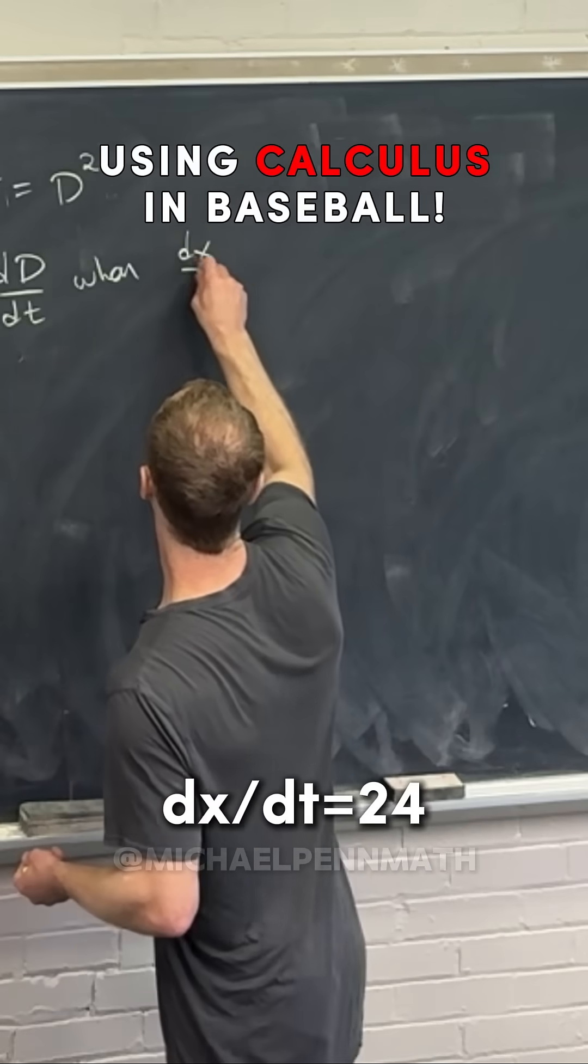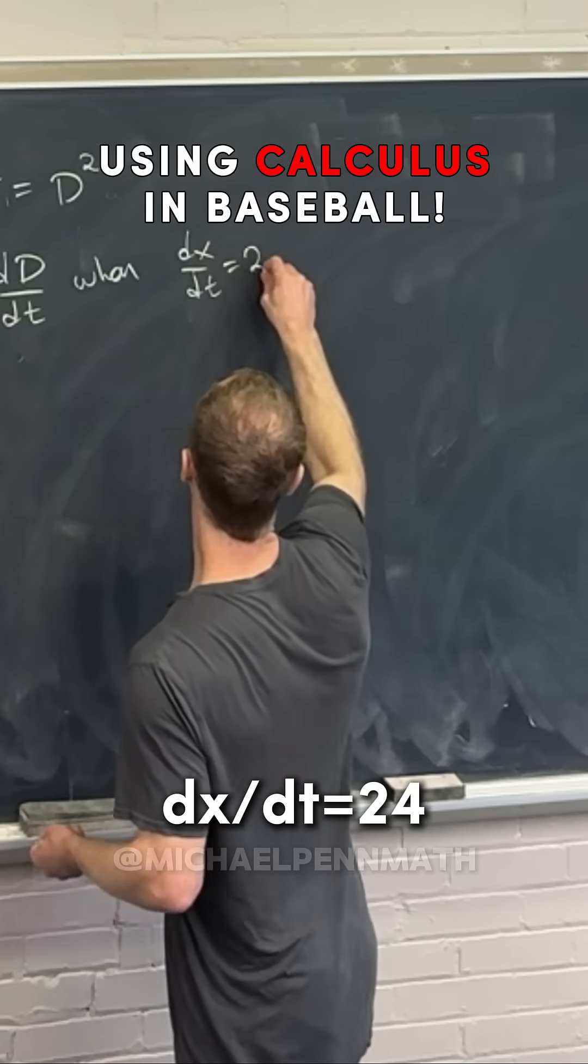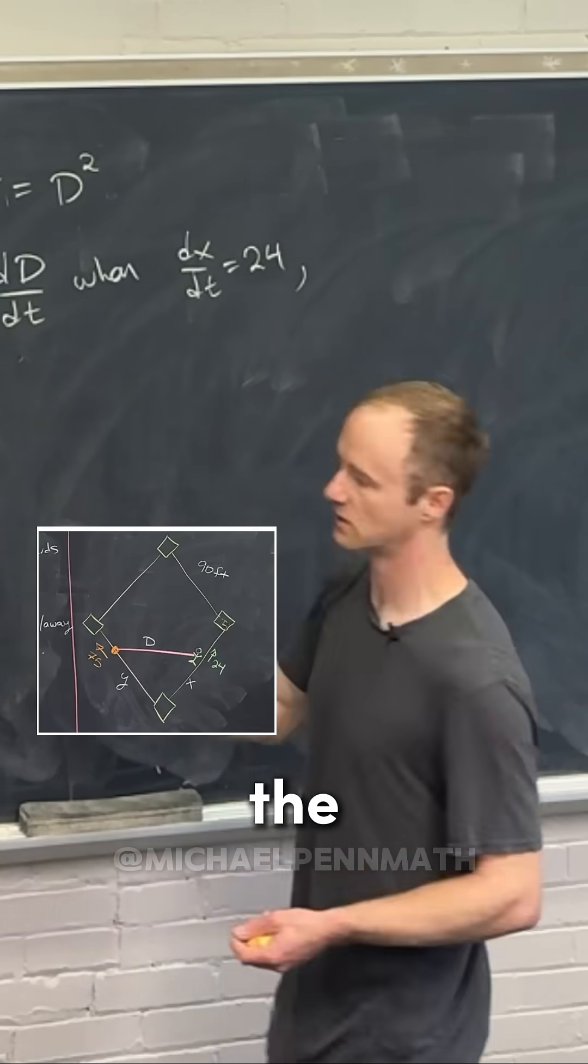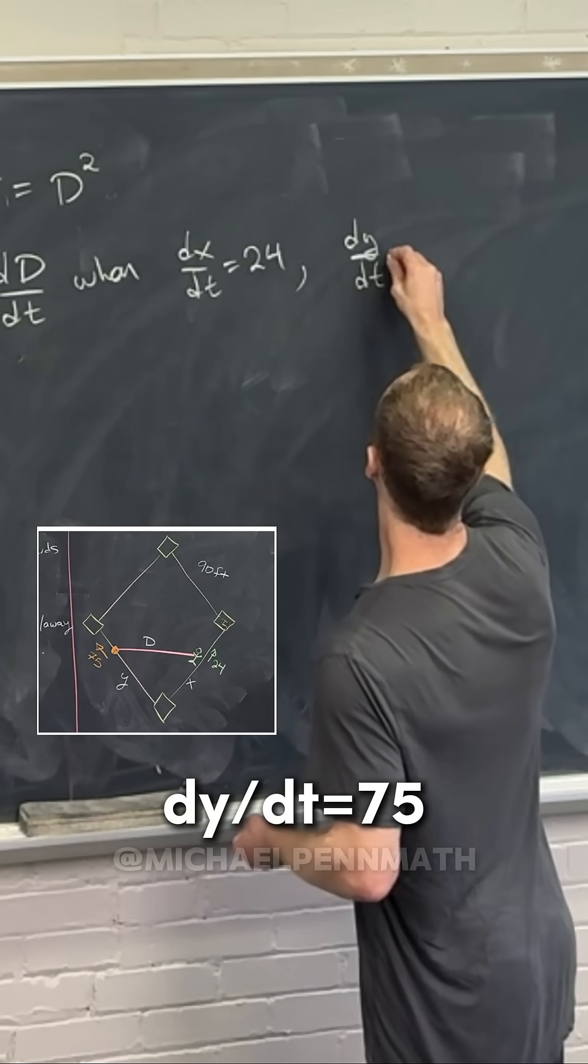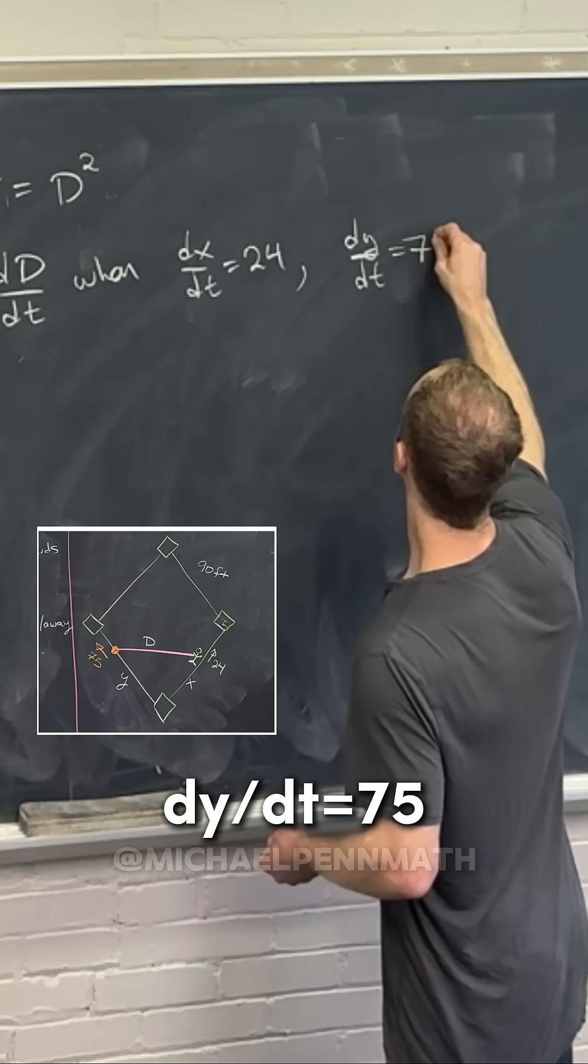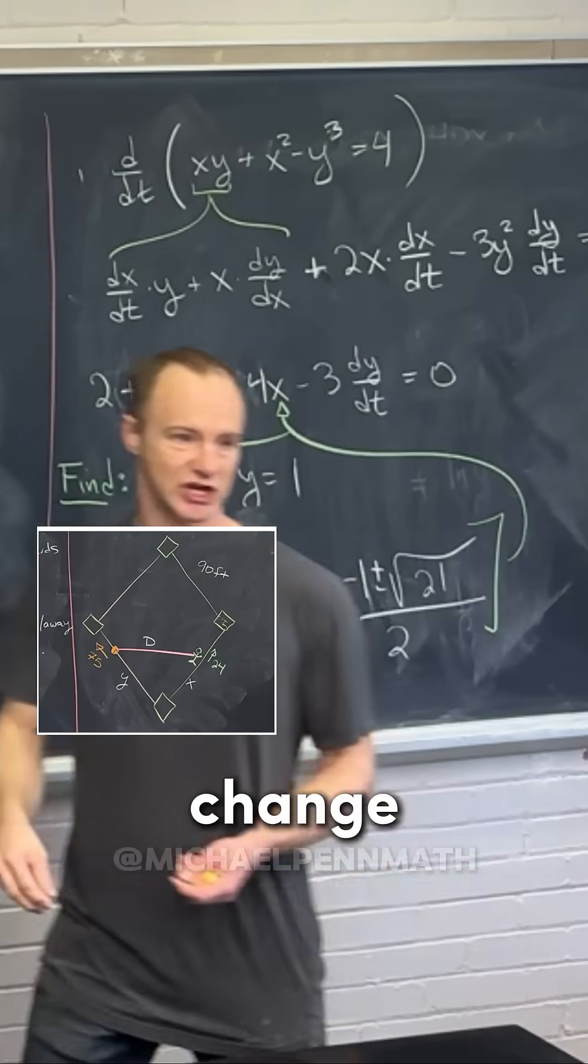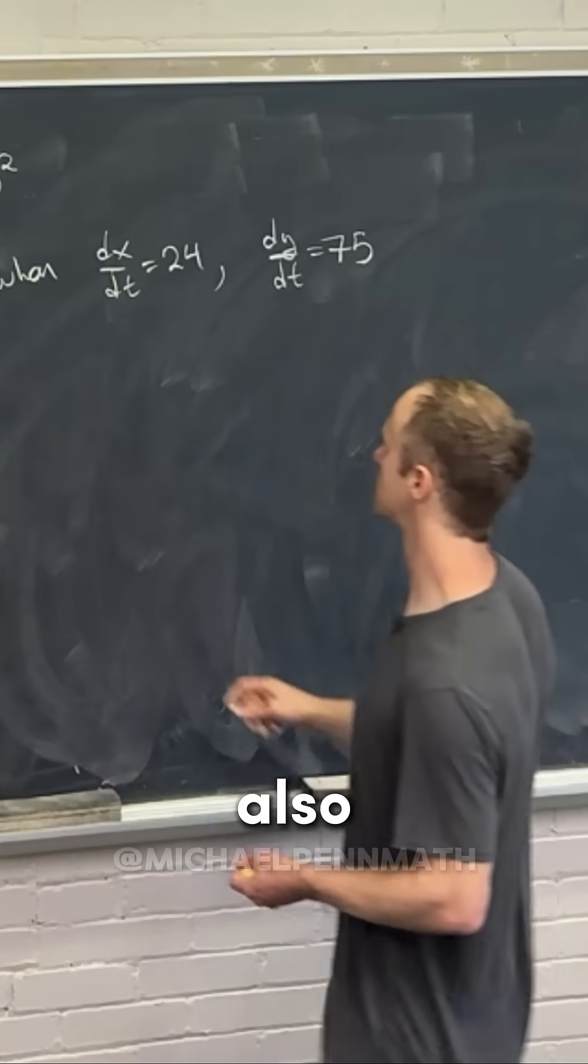Let's see, dx/dt is equal to 24, right, because that's the rate of change of the person. dy/dt is equal to 75 because that's the rate of change of the ball.